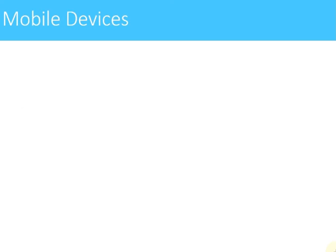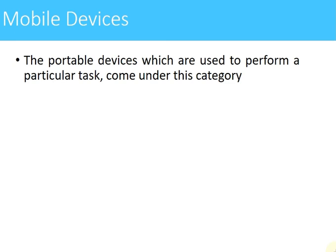Finally, we have mobile devices. Portable devices which are used to perform a particular task come under this category. Mobile devices does not necessarily mean mobile phones — it can be any portable device that is battery-operated, handheld, and can be taken from one place to another. An example is a bus ticket vending machine, which is handheld, battery-operated, can be moved from place to place, has hardware and software inside it, and is used for performing a particular task: vending tickets.